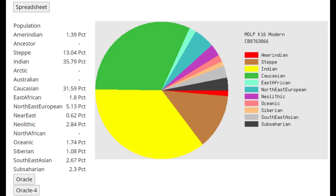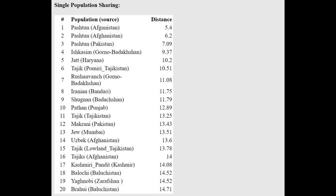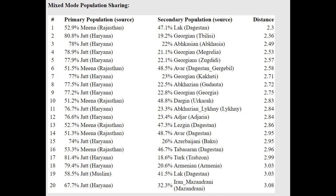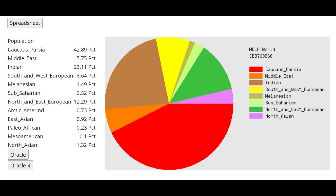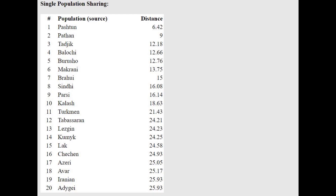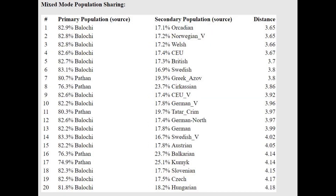With the MDLP K16 Modern Calculator, he is also closest to Pashtuns and can be modeled as a mixture of North Indian groups and Caucasus groups. With MDLP World, he is closest to Pashtuns and Tajiks and can be modeled as a mixture of Baloch people with Northern Europeans, which shows that relative to the Baloch, Pashtuns have more Northern European ancestry, although Baloch have a little too.